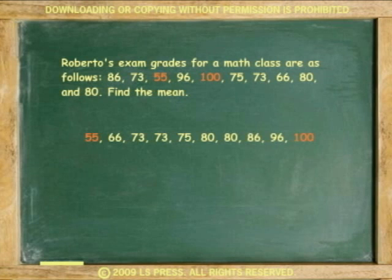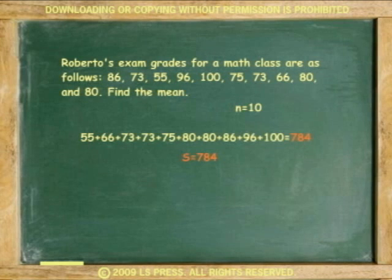Number of observations, in this case exams, is 10. Add all numbers, 784. Divide by 10. The mean is 78.4.